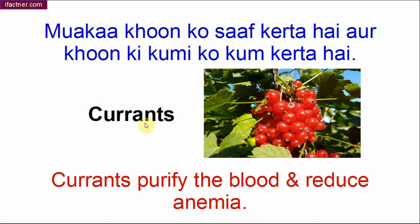Ab aage hamare paas currants — mawaikka — jo khoon ko saaf kerta hai aur khoon ki kami ko kum kerta hai. Jin logo mein khoon ki kami hoti hai yaani anemic hote hain unke liye currants bahut better hote hain. Black currants bhi ho sakte hain, red currants bhi, orange bhi. Currants purify the blood and reduce anemia.